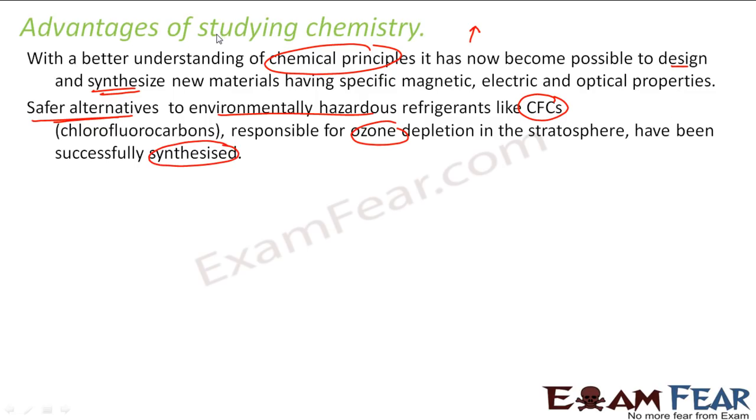We know the properties of these CFCs and then the chemists around the world created a better alternative to CFC which has all the things we need for fridge but which doesn't lead to ozone depletion. Because we had a problem, we knew that there is something which we require for fridge but that also causes ozone depletion. Since we had the knowledge of chemistry, we were able to synthesize. That's an achievement of chemistry.